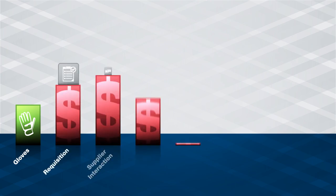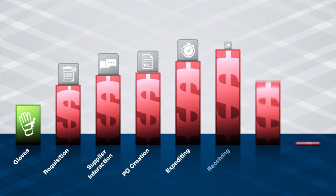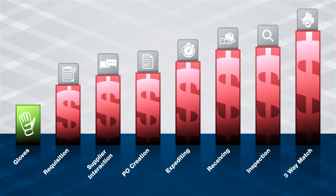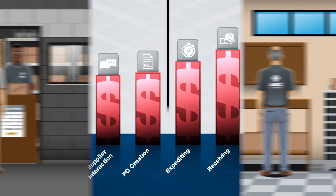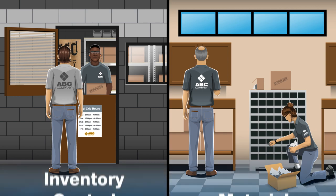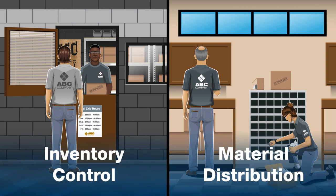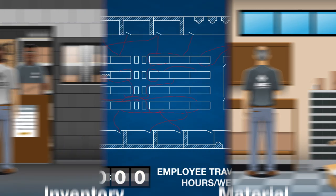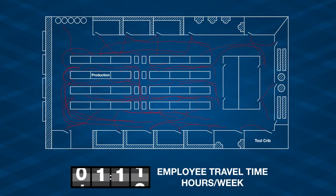To illustrate the concept, let's look at a very common product need: a pair of safety gloves. The purchase price is low, but it takes several steps by various personnel to procure it. It takes labor to physically manage the inventory and distribute materials, and it takes motion and time for the end user to access the product.